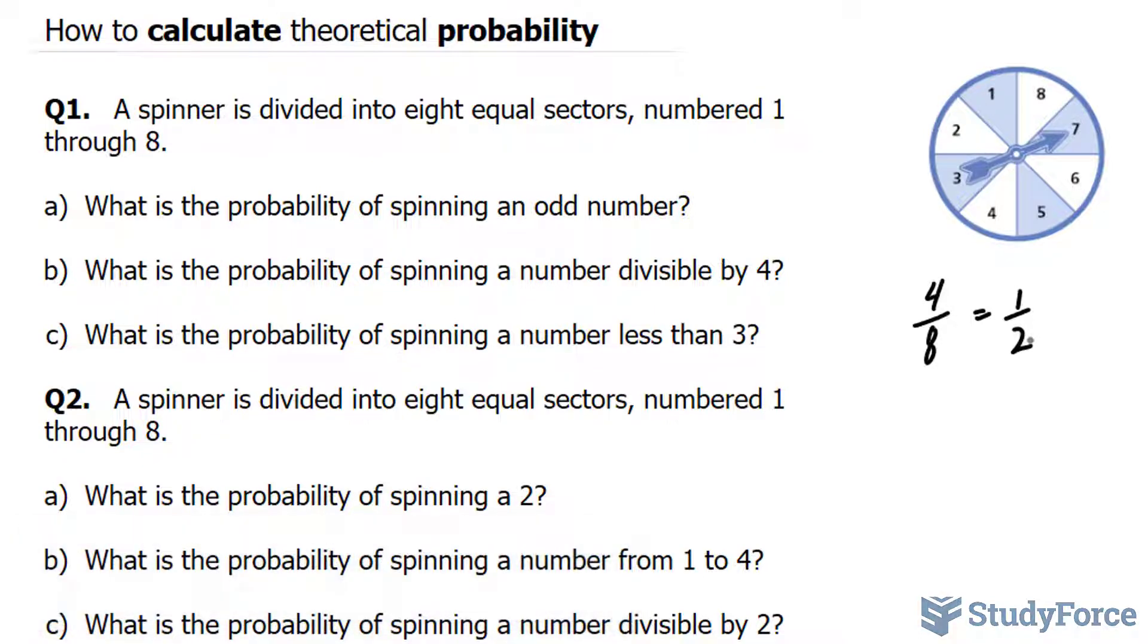What is the probability of spinning a number divisible by four? Well, let's find out the numbers that are divisible by four. Eight divided by four is two, that's one of them. Seven is not. Six isn't. Four is. So we have two possibilities. Two over eight is equal to one over four,